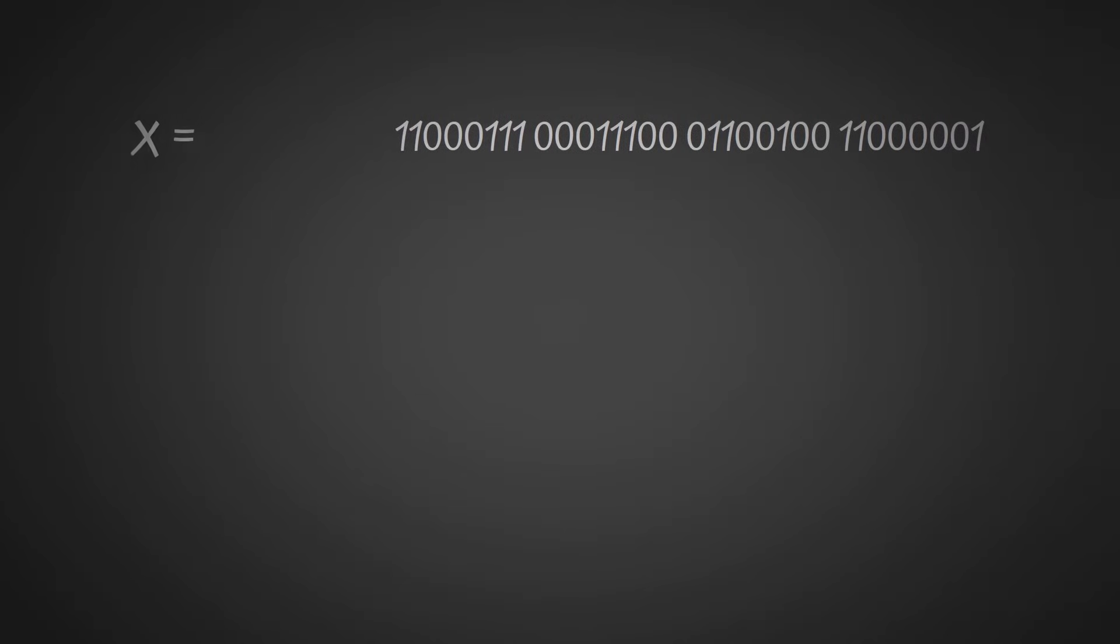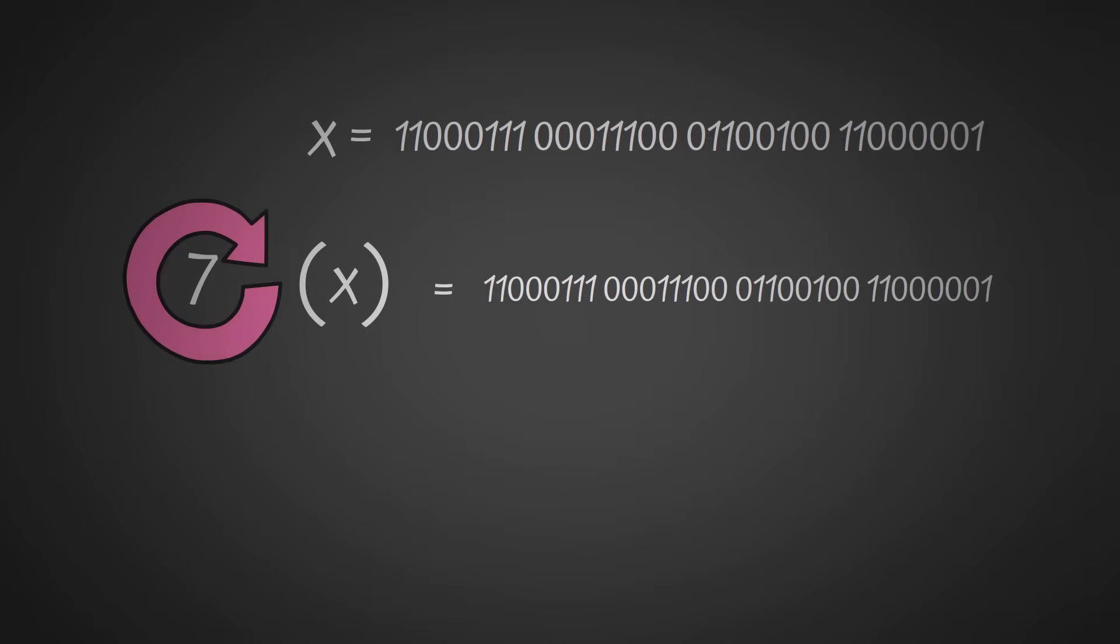Let's take a 32-bit input, call it X. We first do a right rotation of 7 of X, which basically means we get each bit and move it over 7 bits. This bit here, where the red arrow is pointing, gets moved to here, where the blue arrow is pointing. We do the same for each and every bit.